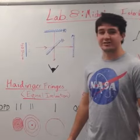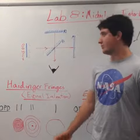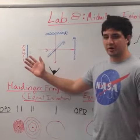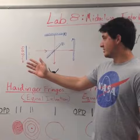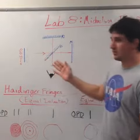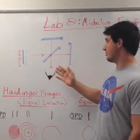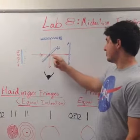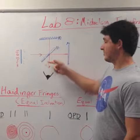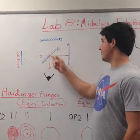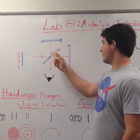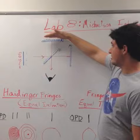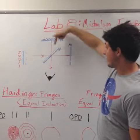In this lab we used a Michelson interferometer, which contained a green mercury light source which was passed through a beam splitter, creating two separate beams. One beam passed through the beam splitter, reflected off the back surface, went back through the other side of the beam splitter up to mirror two, and was reflected from mirror two.